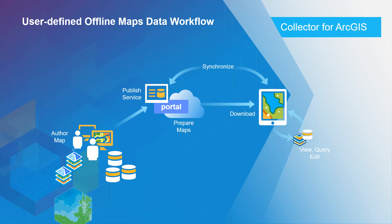Here is the user-defined offline maps data workflow: you author the map, publish it to ArcGIS Online or Portal, then prepare the map for download to your device. Once downloaded for offline use, you can perform queries, view the map, pan, and edit. When you make additions or deletions, you synchronize back to your portal or ArcGIS Online. Any new information available is then downloaded back to your device.